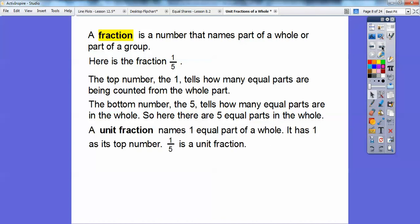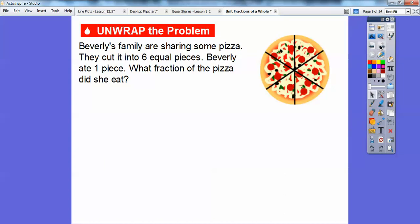A unit fraction names 1 equal part of a whole. It always has a 1 in the top part of the fraction. So, if the top number is 1, it is called a unit fraction. Like this one here, 1 fifth is called a unit fraction because the top number is 1. That's what we're going to be using in most of this lesson here.